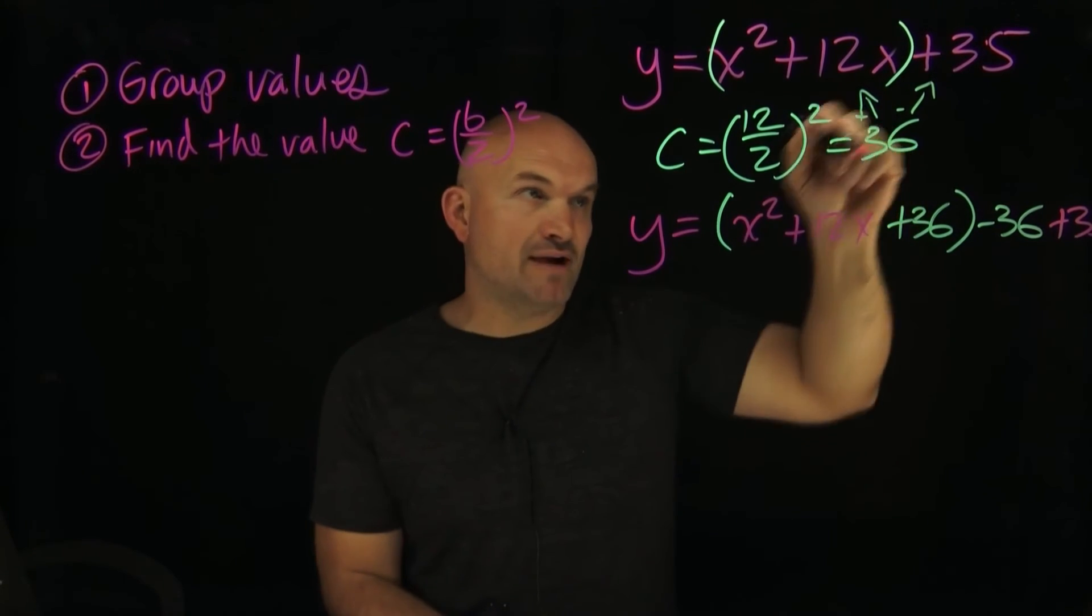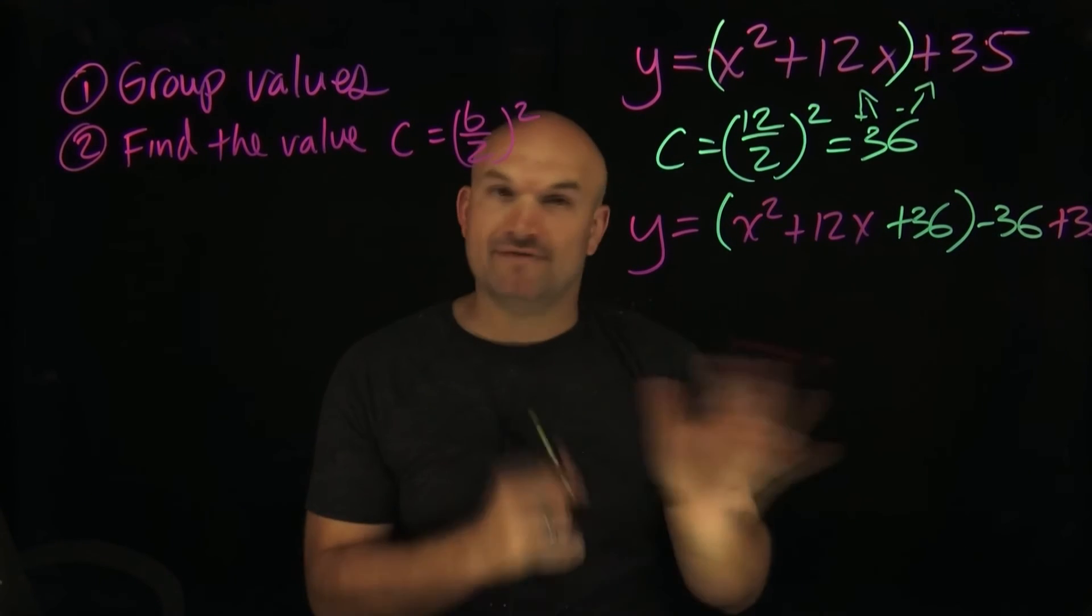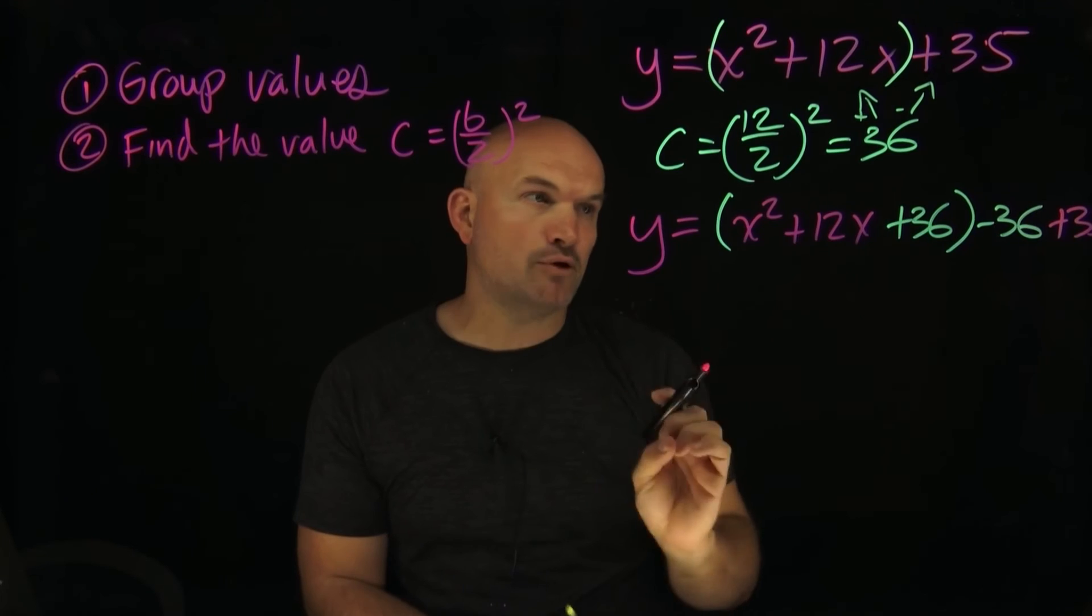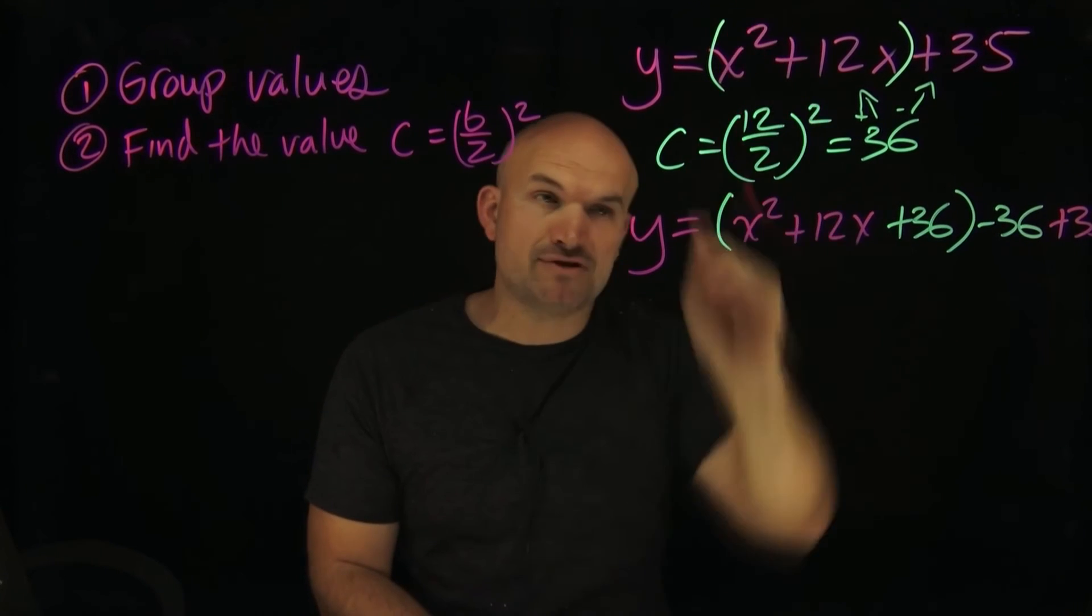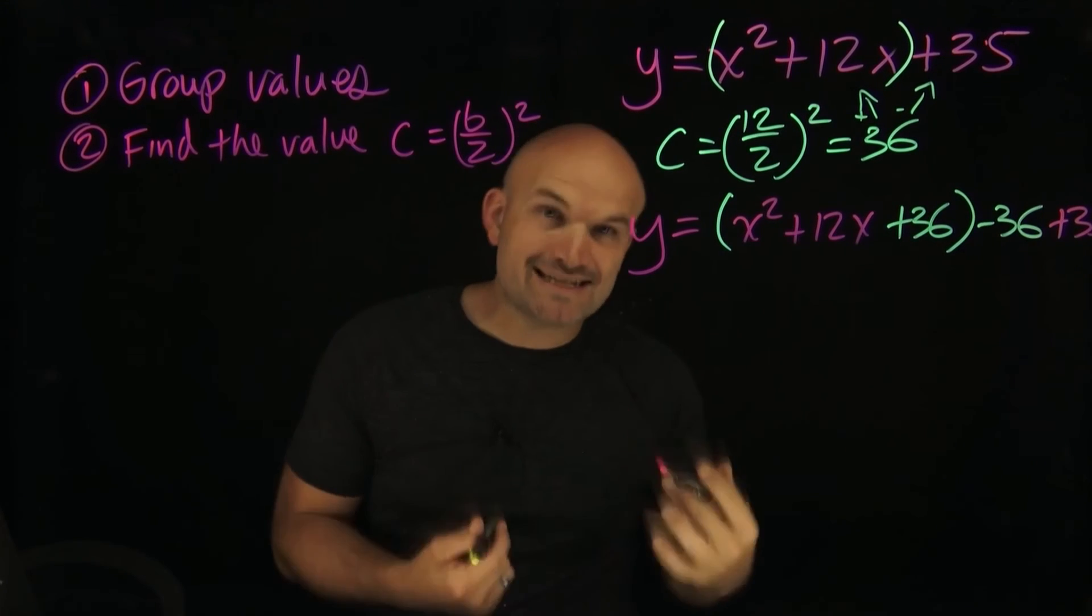So now we have everything simplified. We have the accounting worked out. We found the value c. We added and subtracted it. So we have our accounting good. And the main important thing is we have this group from that first term that is something now that we can factor down. So the last step is pretty simple. It's just going to be simplify.